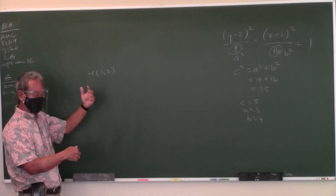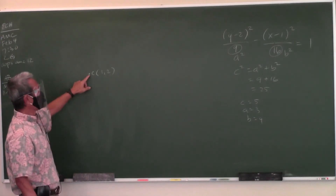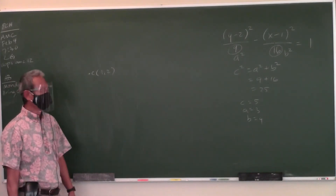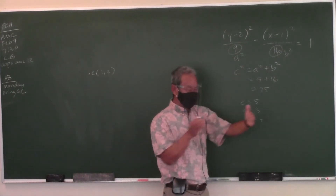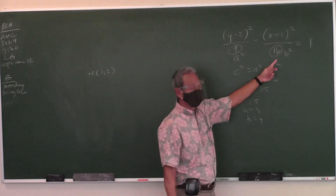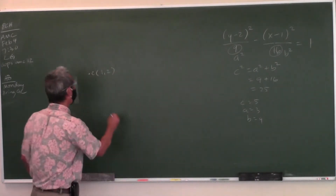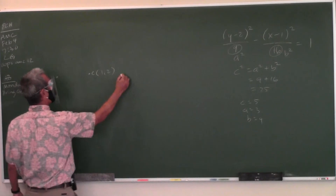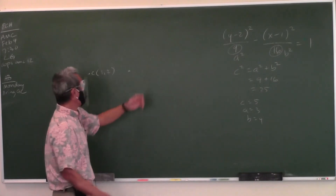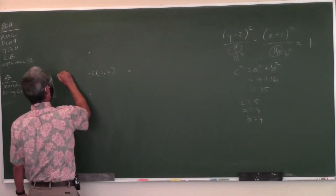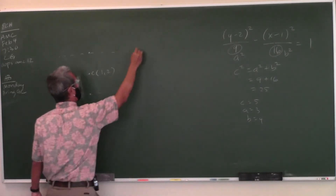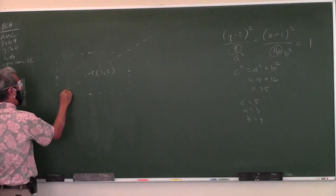Remember the rectangular box from last chapter. For left and right you use b = 4, so you go four left and four right from center. For up and down you use a = 3, so you go three up and three down. Then you draw the rectangular box and its diagonals — those diagonals are the asymptotes.